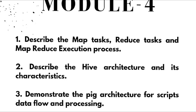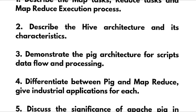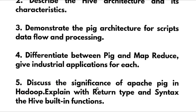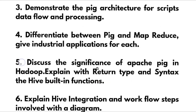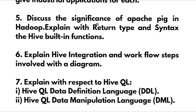For Module 4, describe the map tasks, reduce tasks, and MapReduce execution process. Describe the Hive architecture and its characteristics. Demonstrate the PIG architecture for scripts, data flow, and processing. Differentiate between PIG and MapReduce — a most important question — and give industrial applications for each. Discuss the significance of Apache PIG in Hadoop. Explain with return type and syntax the Hive built-in functions. Also explain Hive integration and the workflow steps involved, with a diagram.